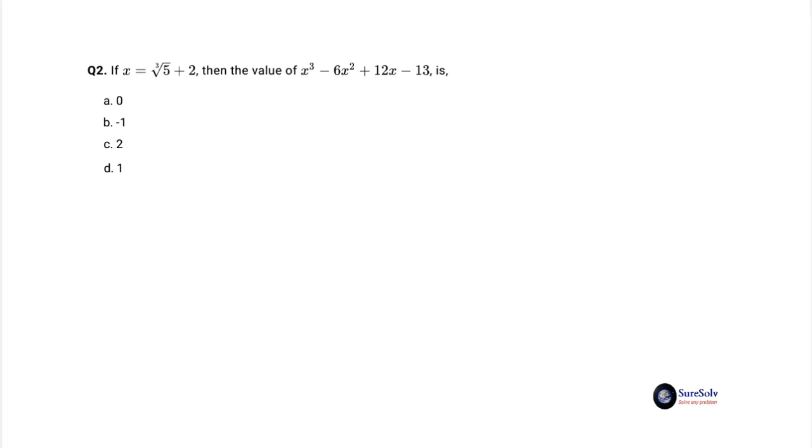Answer option a is 0. Let's show you from the given expression x minus 2 equals cube root of 5. Raise it to its cube, x minus 2 whole cube equals 5. Or, x cubed minus 6x squared plus 12x minus 8 equals 5. Or, x cubed minus 6x squared plus 12x minus 13 equals 0. So target expression value will be 0. Answer option a, 0.